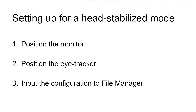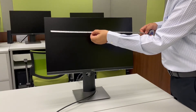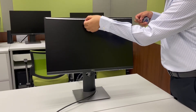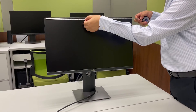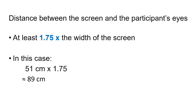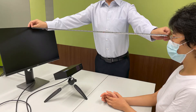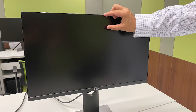There are three steps to take. First, position the monitor of the display PC. Let's measure the width of the screen on the display PC — it's 51 centimeters. The distance between the screen and a participant's eyes should be at least 1.75 times the width of the screen, in this case no shorter than 89 centimeters. A participant's eyes should be at the level of the top quarter of the screen.